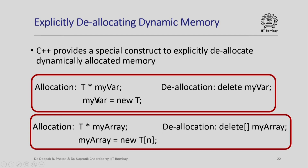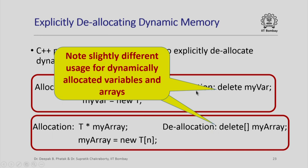If you allocated memory for a single variable, you can deallocate that memory by simply saying delete and the name of the pointer variable which stores the address of the dynamically allocated variable. If you allocated an array dynamically, you deallocate it the same way except that you put two square brackets to indicate to the computer that you are deallocating an entire array that was dynamically allocated. Note the slight difference in usage — square brackets indicate you are deleting an entire array; otherwise the keyword is just delete.